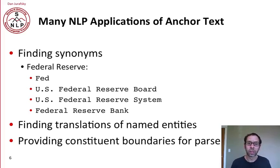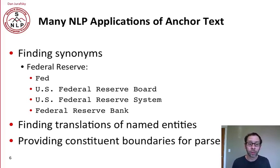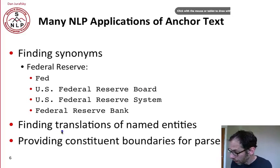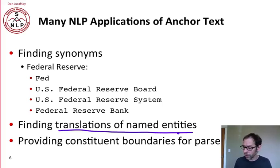There are many applications of anchor text besides information retrieval. Anchor text is a great way to find synonyms. If we have a page referring to the Federal Reserve Bank, we can look at the anchor text of all pages pointing to it — the anchor text might say 'Fed', 'US Federal Reserve Board', or 'Federal Reserve Bank', telling us these are synonyms. We can do this not just in one language but many. We could see translations from another language pointing to the Federal Reserve site, giving us the foreign language translation of 'Federal Reserve'.